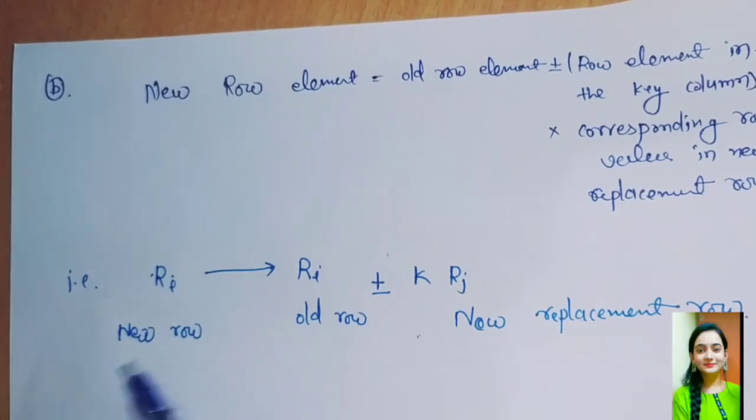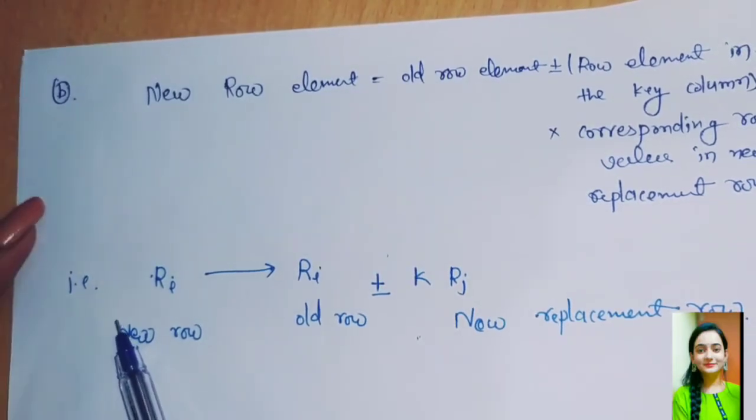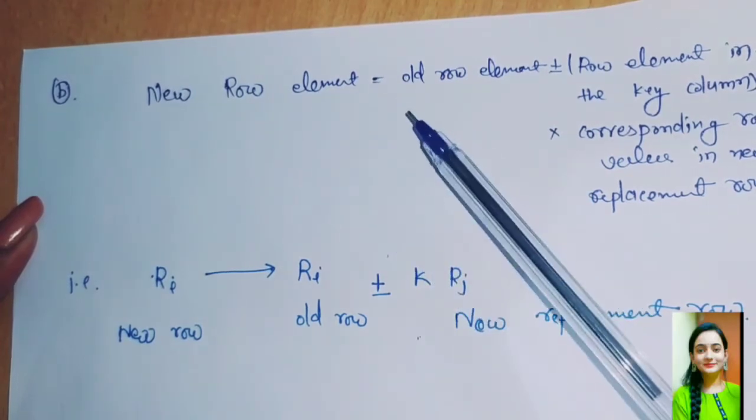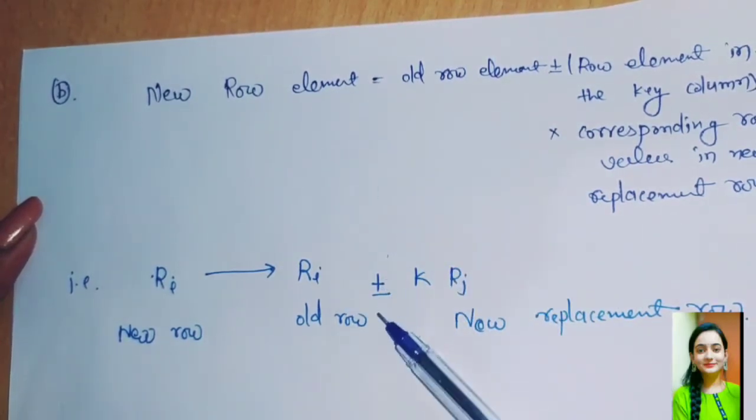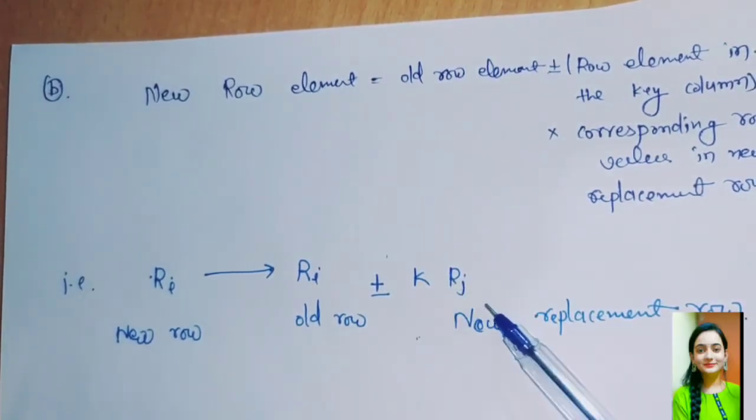Second operation: new row element equals old row element plus or minus k times rj, which is the new replacement row.